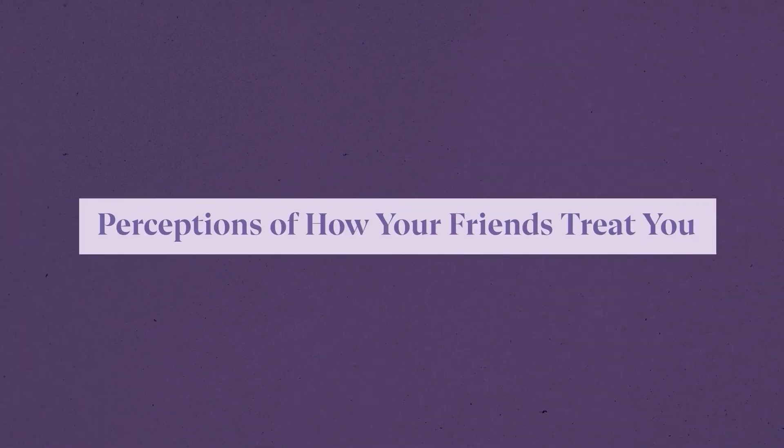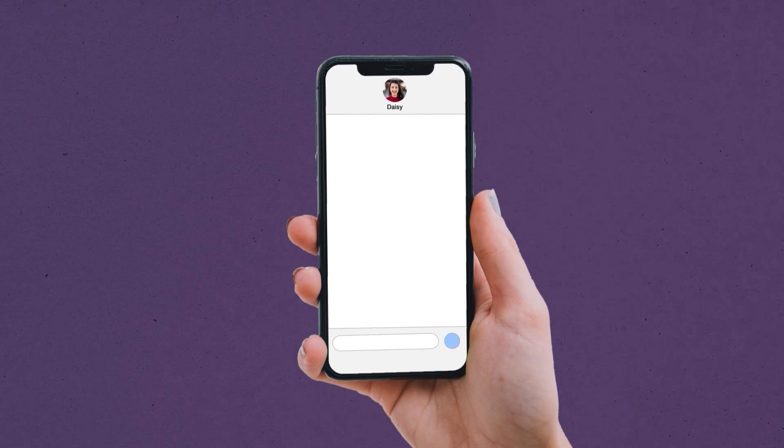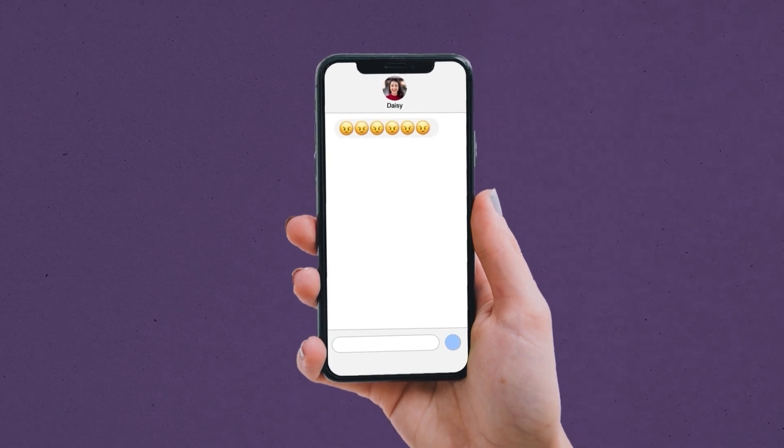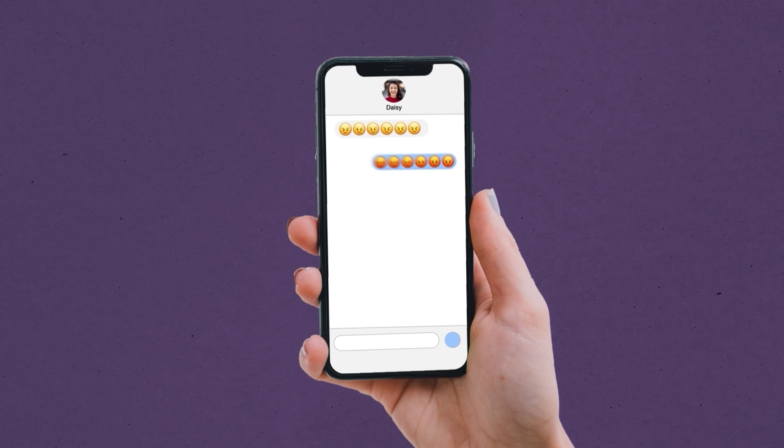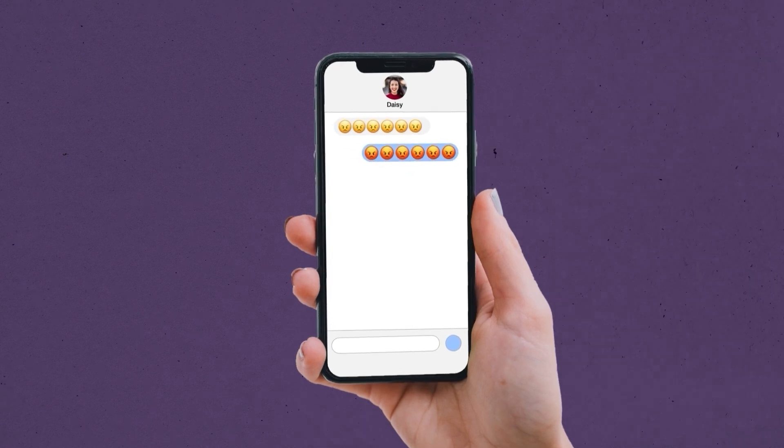For example, issues in your friendships could escalate quickly due to your perceptions of how your friends treat you. Let's say that a friend forgets to text you back. You might see this as them rejecting you or being angry at you. So in response, you may become confrontational.